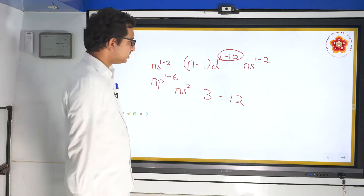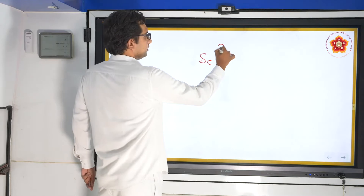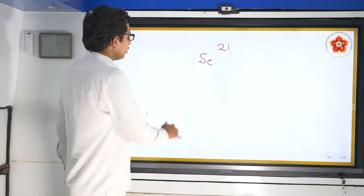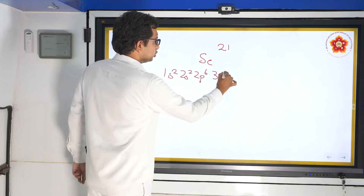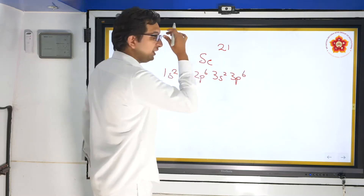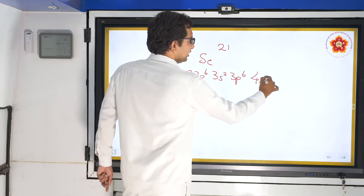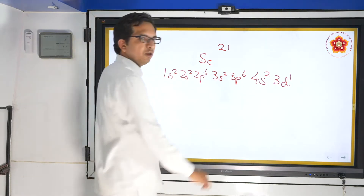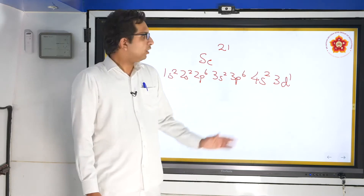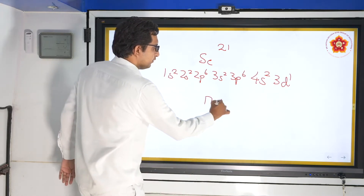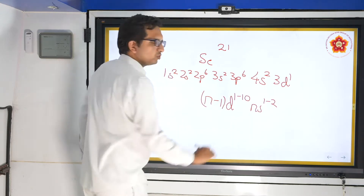The d orbitals only start after the s orbital has been filled completely. For example, take scandium with atomic number 21. Writing the electronic configuration: 1s², 2s², 2p⁶, 3s², 3p⁶ — this completes 18 electrons. For the remaining 3 electrons, we write 4s², 3d¹, which indicates that filling of the d orbital occurs only after the 4s orbital.